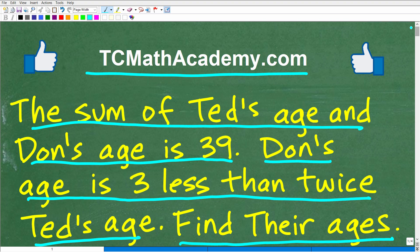And as I indicated, this is an algebra word problem. Now, you don't absolutely have to use algebra to figure this problem out. You could just try to reason through it and experiment around with different age combinations. But the whole intent of this problem is to actually use algebra to solve this, to answer the question, what is the age of Ted and Don?